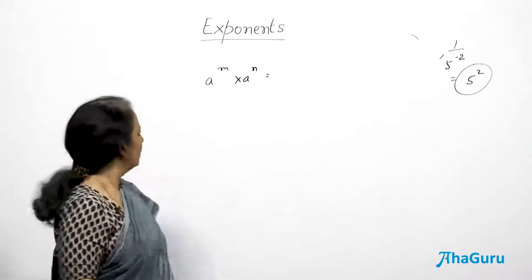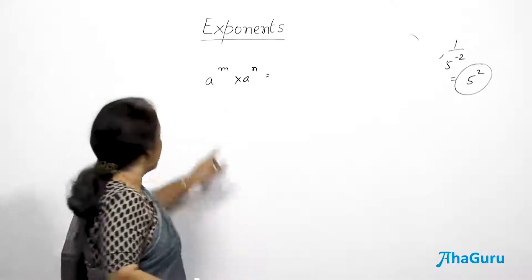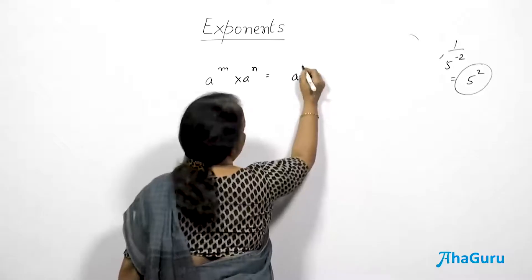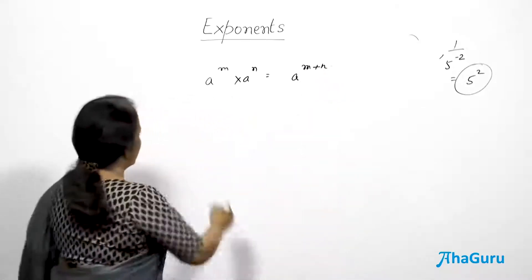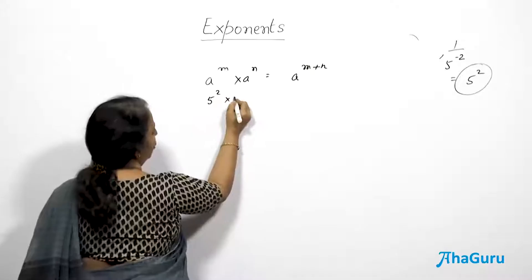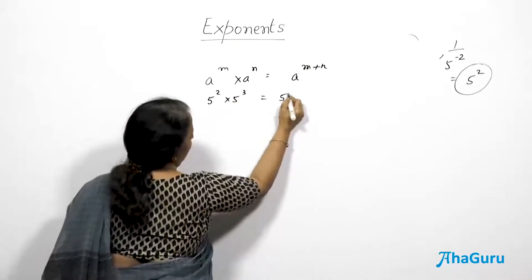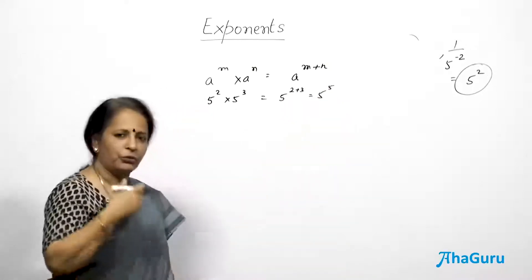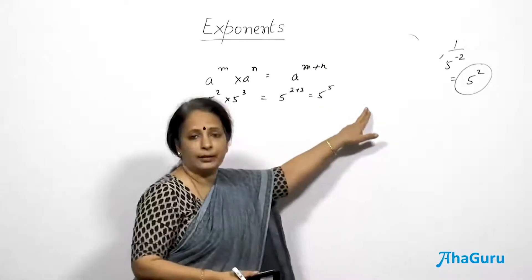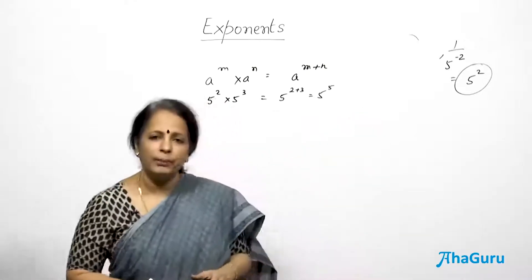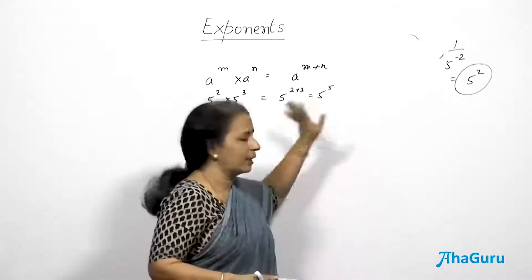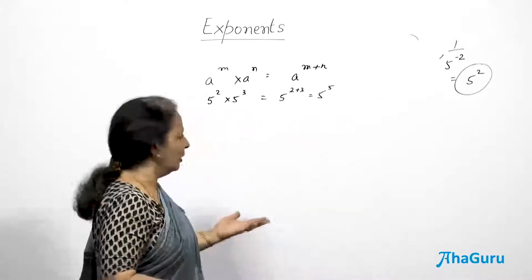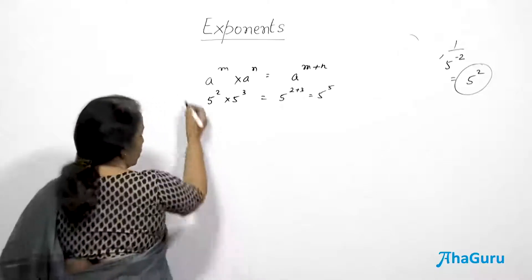The first law: a^m multiplied by a^n — if the bases are the same but the powers are different and they are multiplied, all you have to do is add the powers. So a^m × a^n = a^(m+n). For example, 5² × 5³ = 5^(2+3) = 5^5. If you need to evaluate, find the answer; if the question says simplify, you can leave it there — no need to multiply 5 five times.